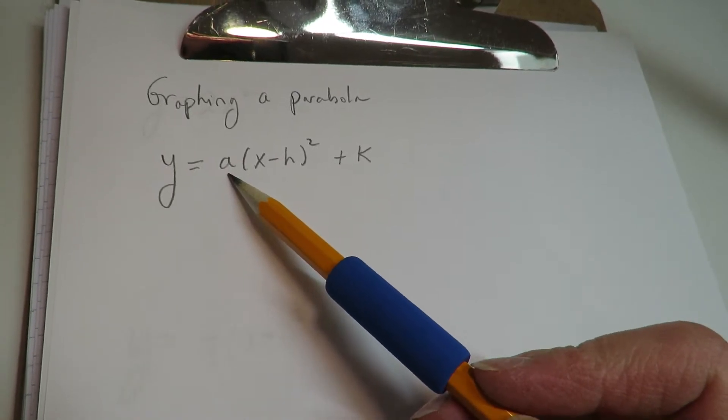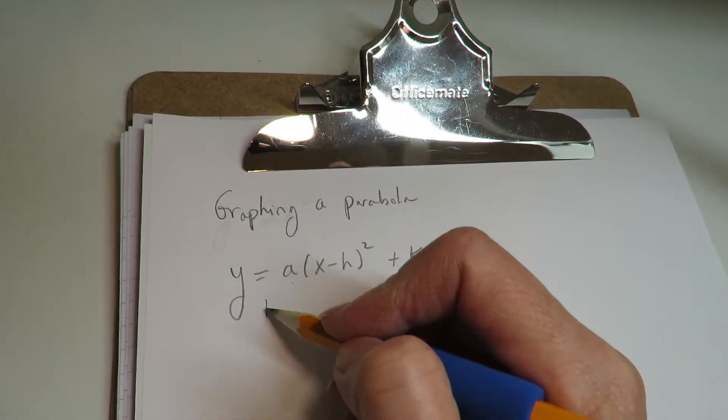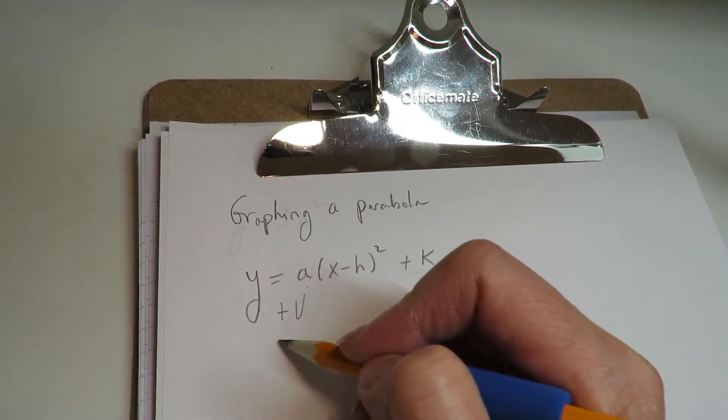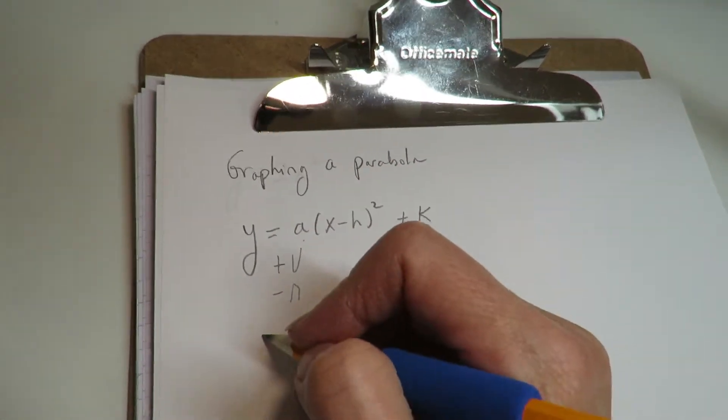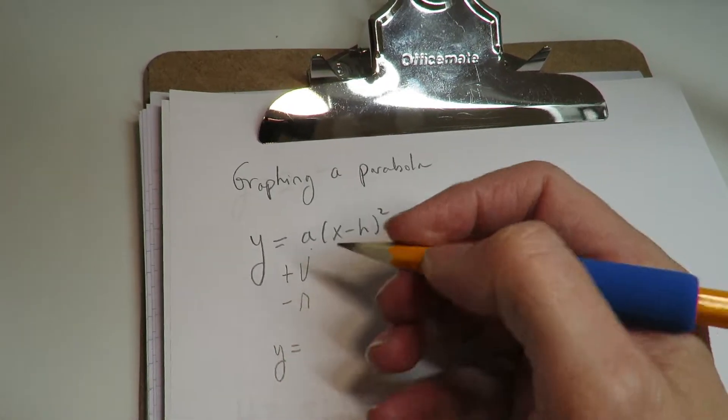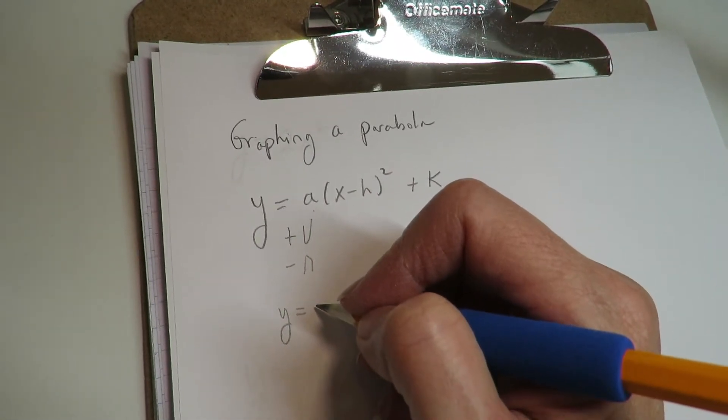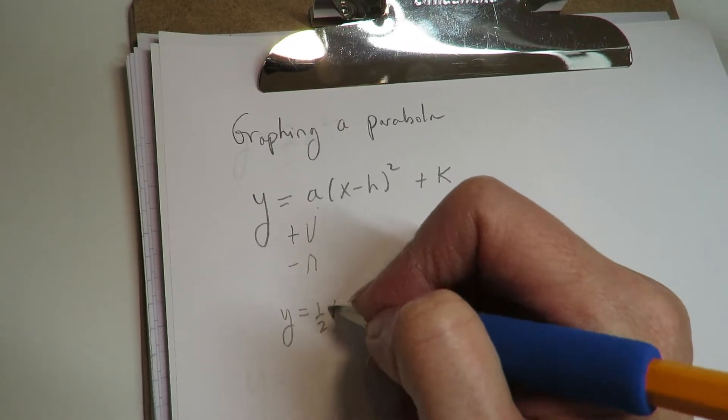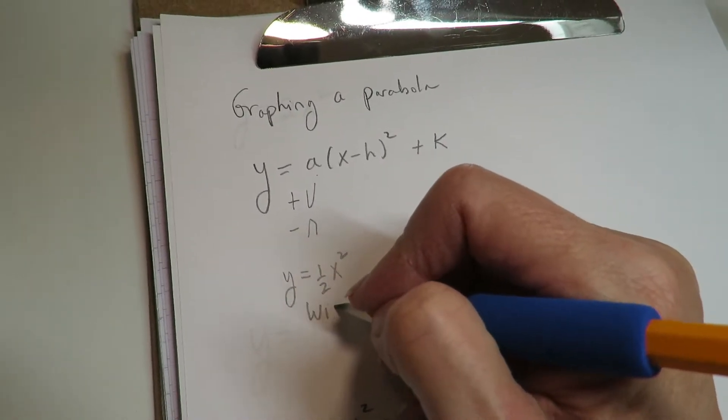The a in front makes it face up or face down. If the a is positive, it's face up. If it's negative, it's face down. If the a is between negative 1 and 1, something like a half x squared, it's going to end up being wide.